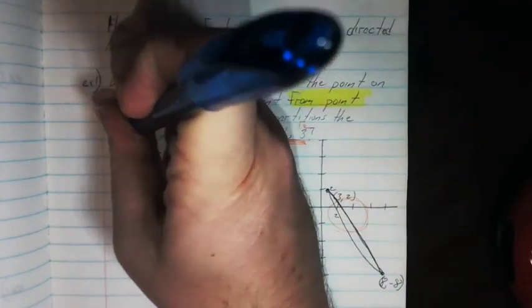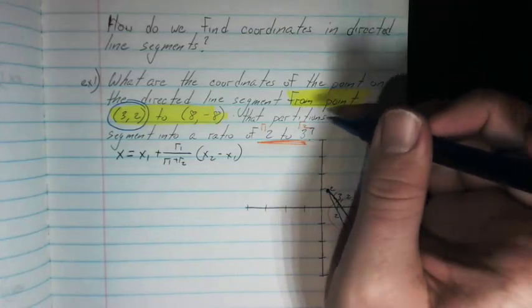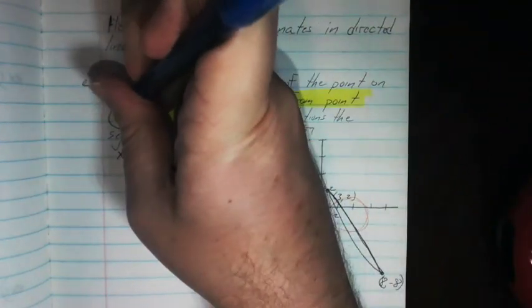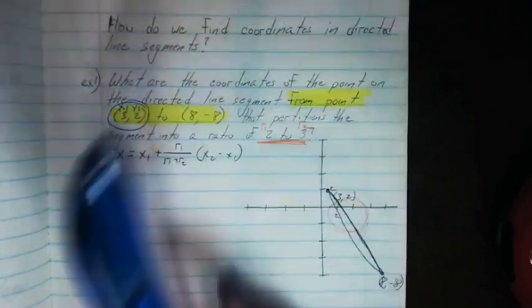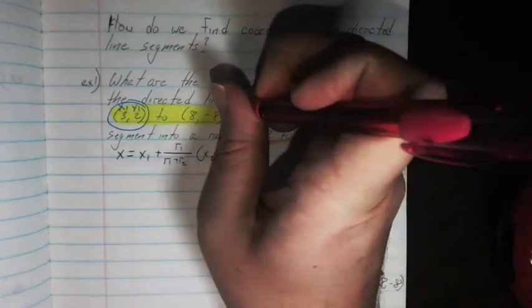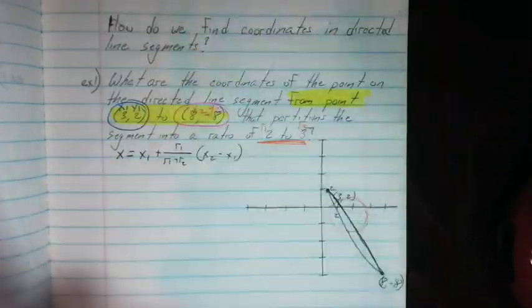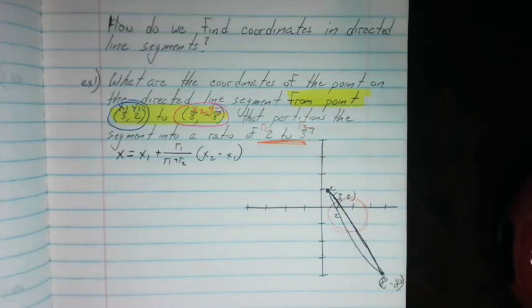Now let's call this, because it's the point we're starting at, we're going from that point, we're going to call this x1 and y1. It's important here that we call that the first one. Just like it's important that we call this the second. So it's x2 and y2. Now all we do is just plug it all in.